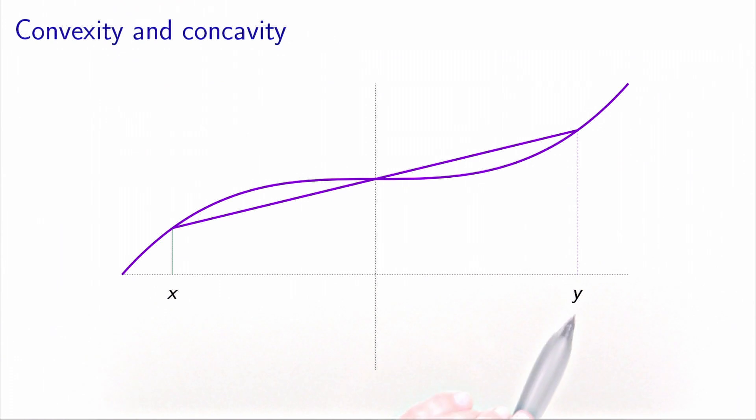Indeed, let's take these two points x and y. If we draw the line between x f of x and y f of y, this line is not always above the function. So the function is not convex in this case, in this part of the graph.